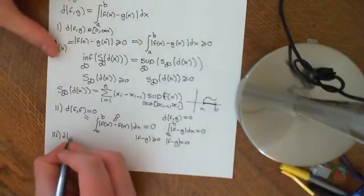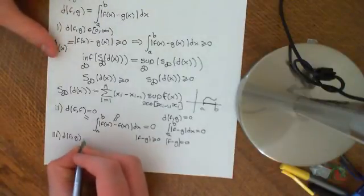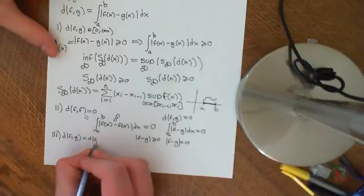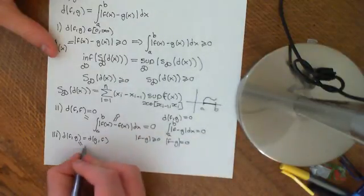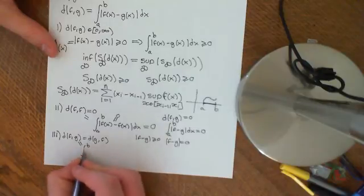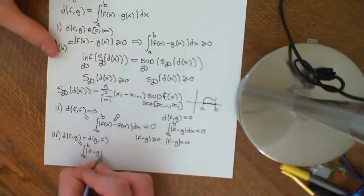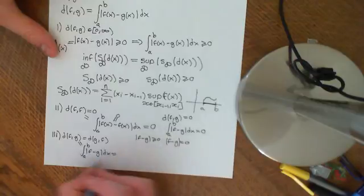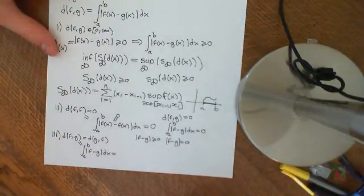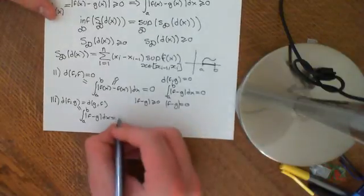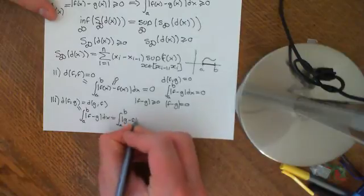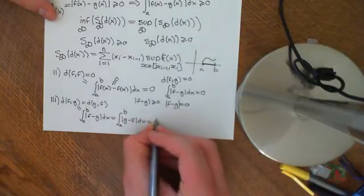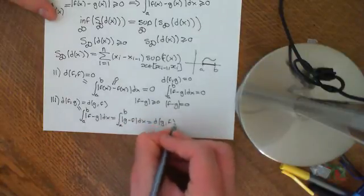Then we verify that the distance between F and G equals the distance between G and F. The distance between F and G is the integral from a to b of |F − G| dx. The absolute value sign does not care whether we subtract G from F or F from G, so this equals the integral from a to b of |G − F| dx, which equals the distance between G and F. So it's symmetric.